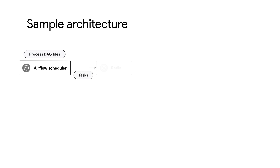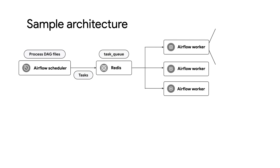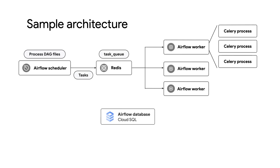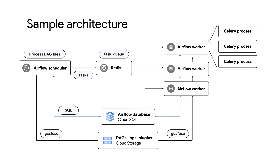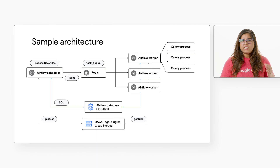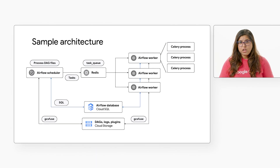Here is an example of a sample architecture. The Airflow Scheduler takes action by processing a DAG file with all the listed tasks. This triggers multiple threaded workers to complete these tasks.